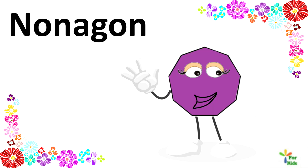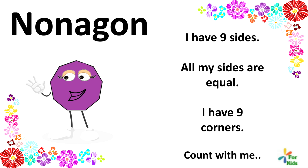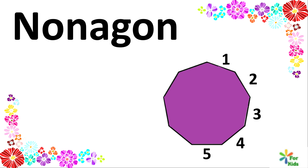Nonagon. Say hi to nonagon. I have nine sides. All my sides are equal. I have nine corners. Count with me. One, two, three, four, five, six, seven, eight, nine.